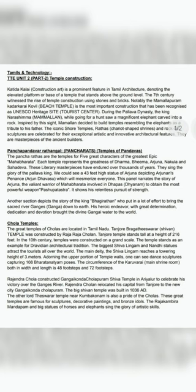The great temples of Cholas are located in Tamil Nadu. The Tanjur Brahadishwara Sivan temple with a huge Nandi was constructed by Rajaraja Cholan. Tanjur temple stands tall at a height of 216 feet. In the 10th century, temples were constructed on a grand scale. The temple stands as an example of the Dravidian architectural tradition. The biggest Shivalingam and Nandi statue attract tourists from all over the world.